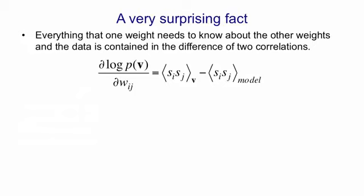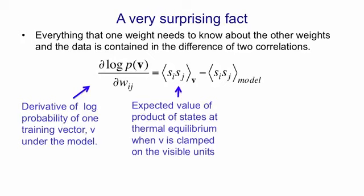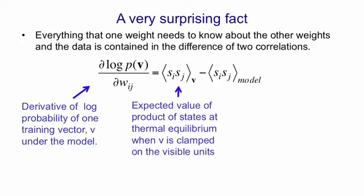Another way of saying that is that if you take the log probability that the Boltzmann machine assigns to a visible vector v, and ask about the derivative of that log probability with respect to a weight w_ij, it's the difference of the expected value of the products of the states of i and j when the network settles to thermal equilibrium with v clamped on the visible units.